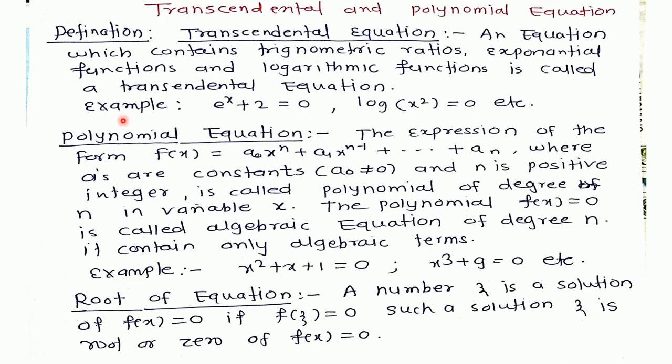Now, polynomial equation. The expression of the form f(x) = a_0*x^n + a_1*x^(n-1) + ... + a_n, where a_i are constants and a_0 ≠ 0, and n is a positive integer, is called a polynomial of degree n in variable x. Note: we take a_0 ≠ 0 because if a_0 = 0, then this polynomial is of degree less than n. Since we're specifying degree n, a_0 must not equal zero.